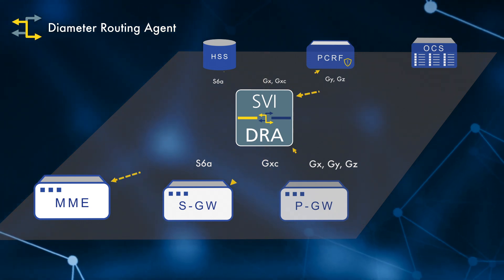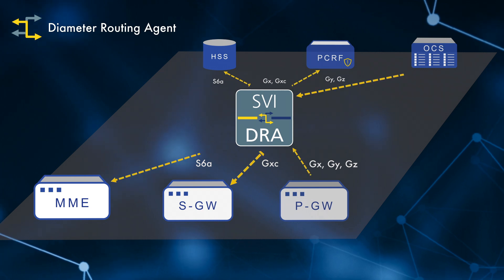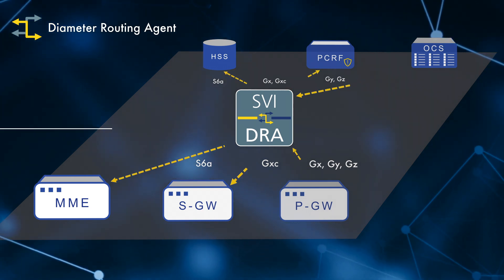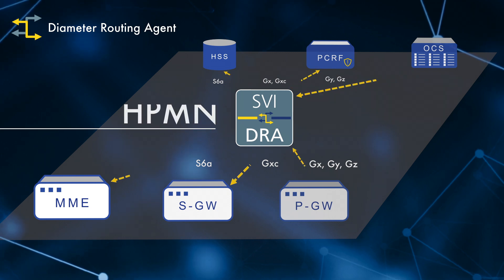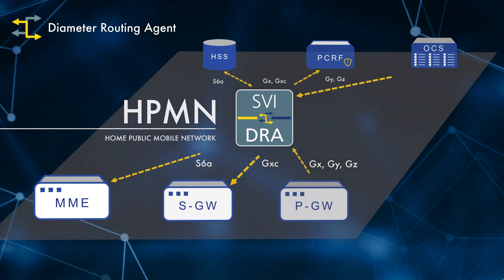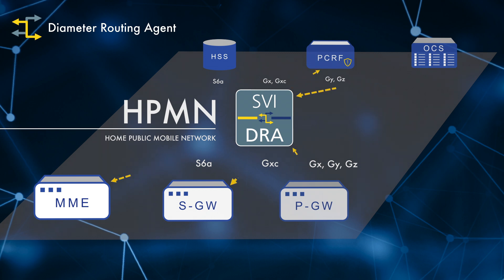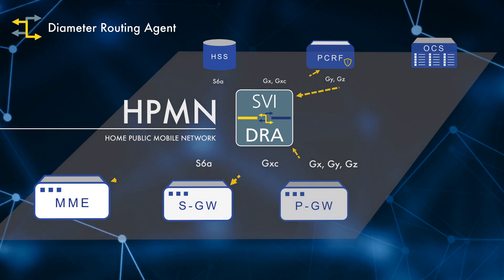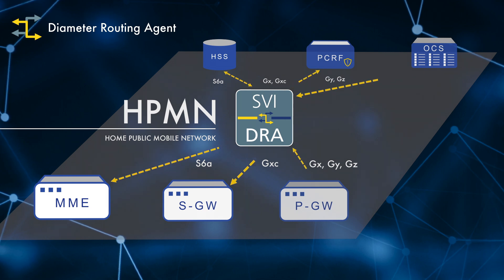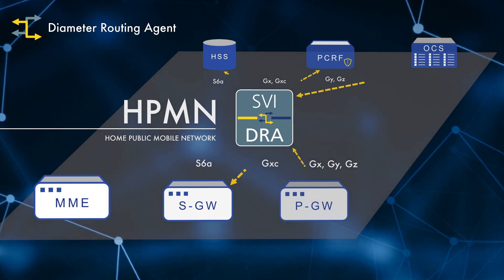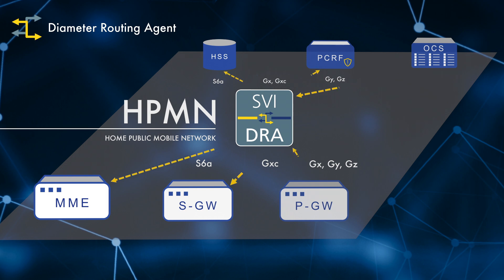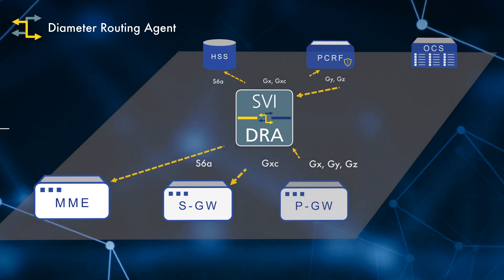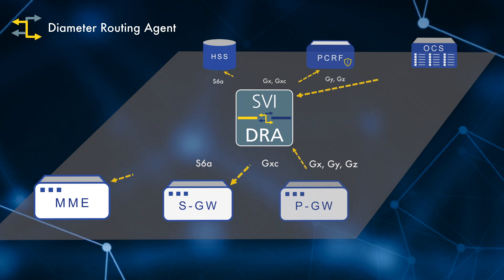At the core of the DSC is the Diameter Routing Agent, or DRA. The DRA centralises the routing of diameter messages within a service provider's IMS and LTE core. The Diameter Routing Agent acts as a mediation platform within the network, providing load balancing and throttling to ensure the optimum management of the diameter network.